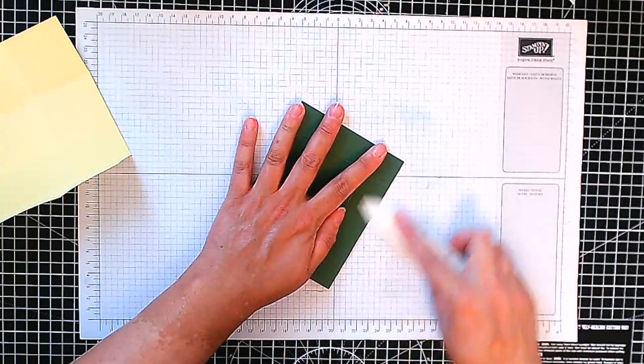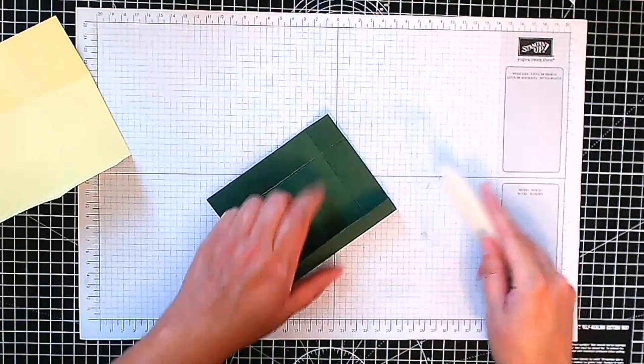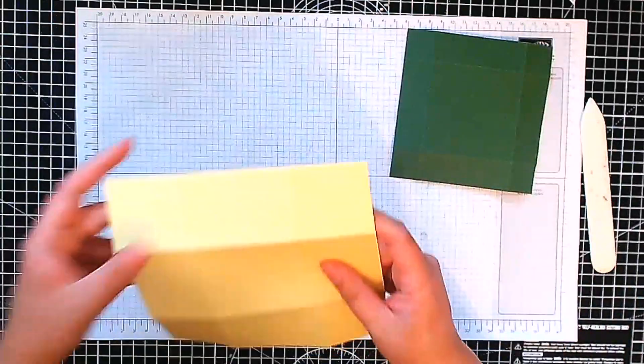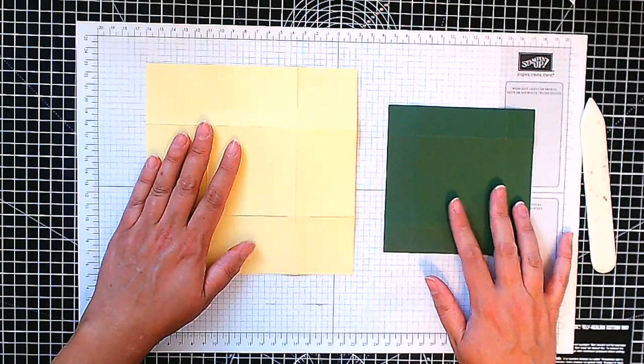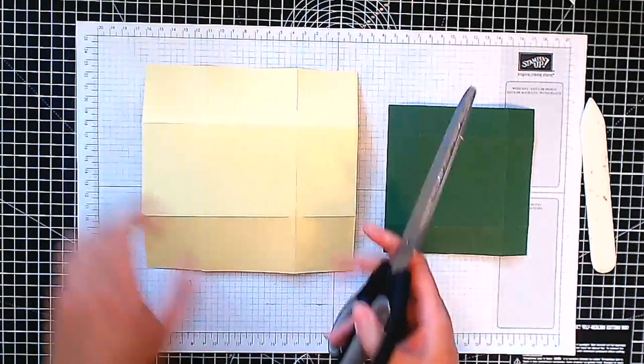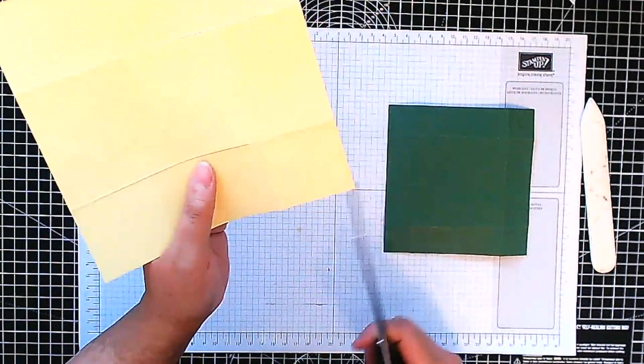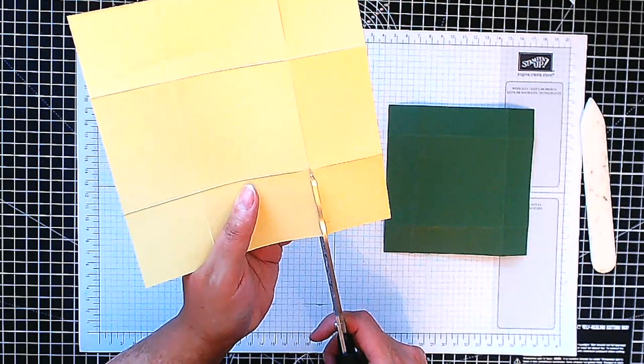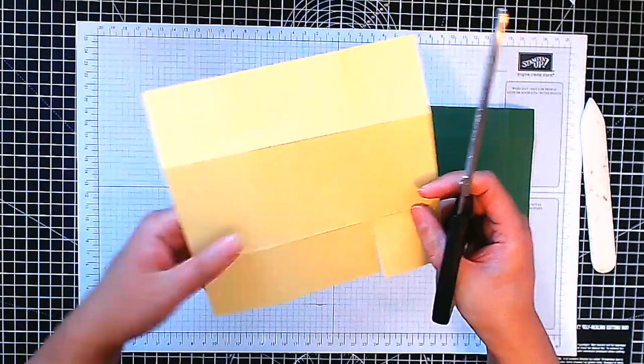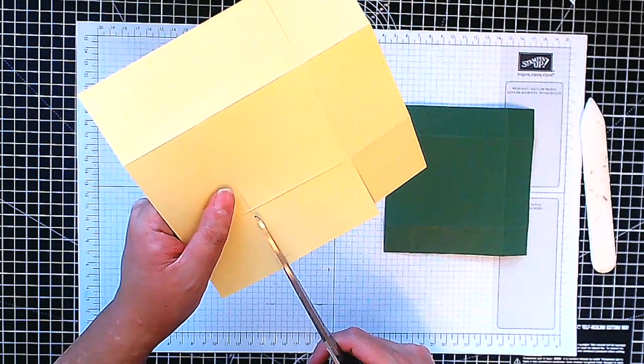This is when a good bone folder is invaluable. Okay, now it's time to do some cutting. So we put both of our squares down like that, bring in our scissors, and you are going to cut along the score line here up to the score line, up to the first score line, and you're going to do this in all four corners.